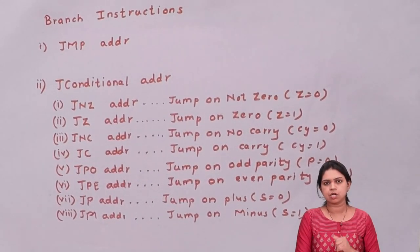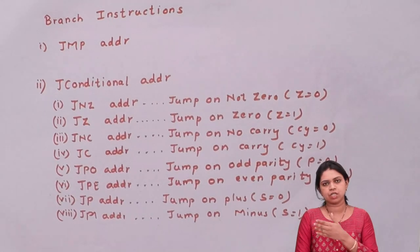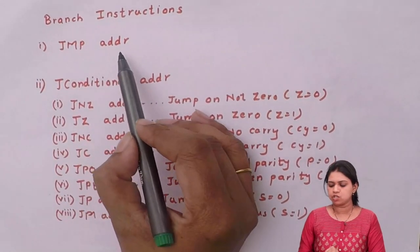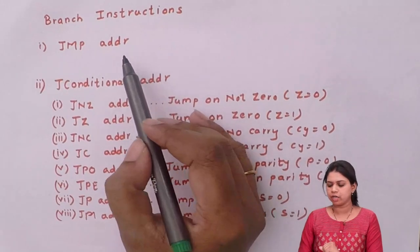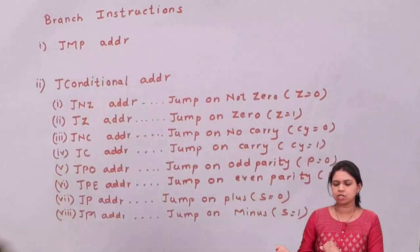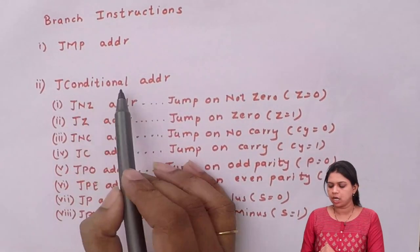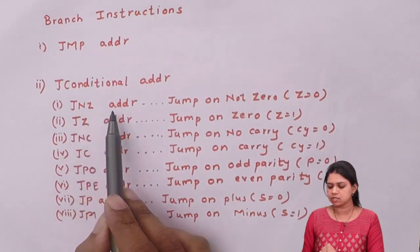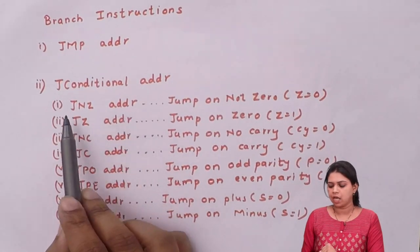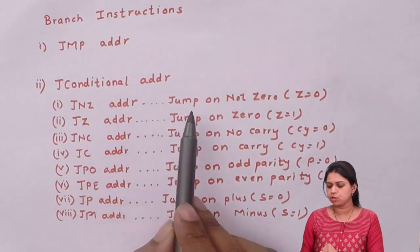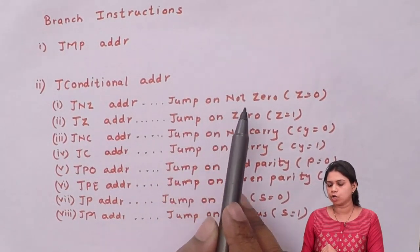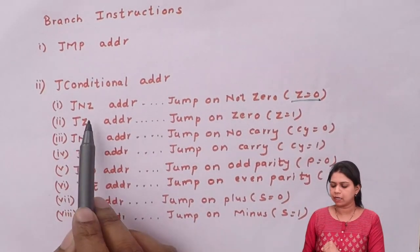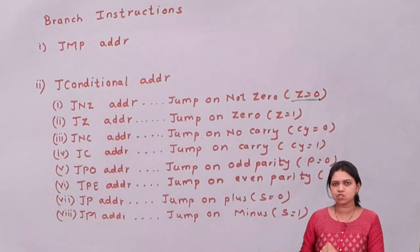Let us see every instruction of the conditional address one by one. Number one is JMP address — you have to jump onto some address unconditionally. In the conditional address, the number one is JNZ address. In JNZ address, you have to jump on not zero, meaning when your Z flag is equal to zero, at that time only you will jump.